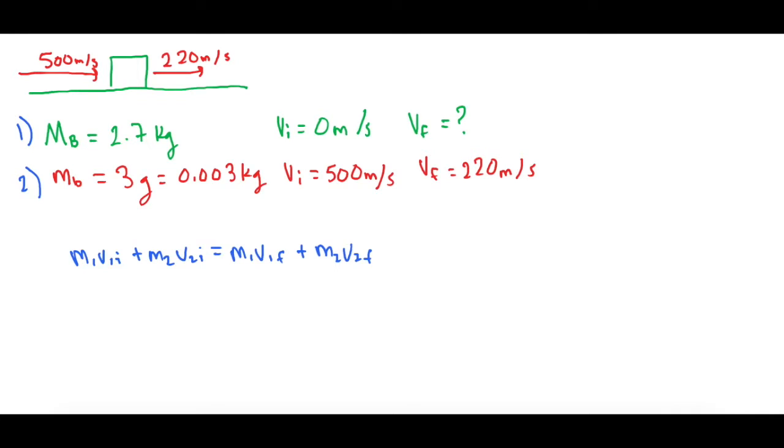All right, and then we're looking for the final speed or the final velocity of number one. So we're looking for this guy right there. So let's subtract over M2 V2 final.